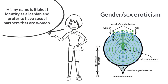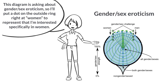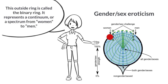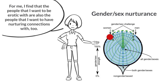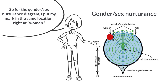Hi, my name is Blake. I identify as a lesbian and I prefer to have sexual partners that are women. This diagram is asking about gender sex eroticism, so I'll put a dot on the outside ring right at women to represent that I'm interested specifically in women. This outside ring is called the binary ring — it represents a continuum or spectrum from women to men. I find that the people I want to be erotic with are also the people I want to have nurturing connections with, so for the gender sex nurturance diagram, I put my mark in the same location, right at women.